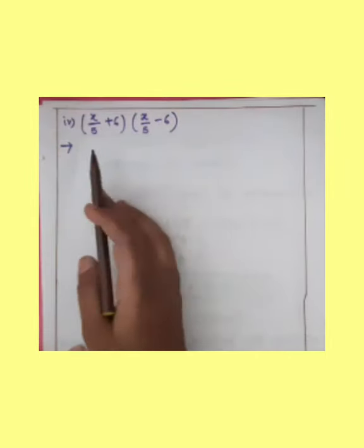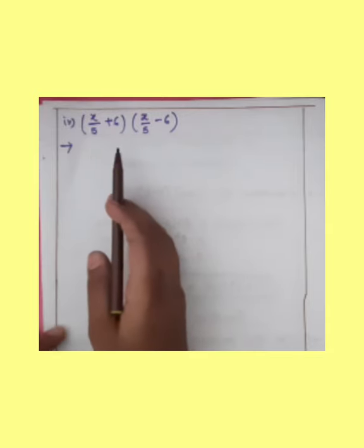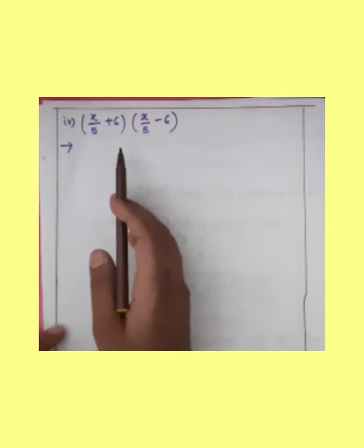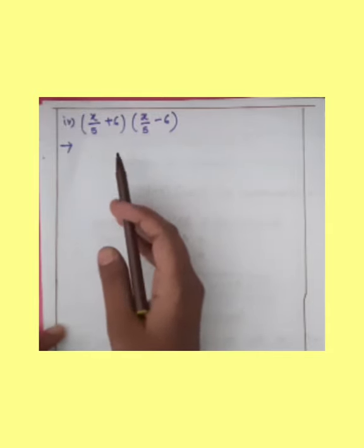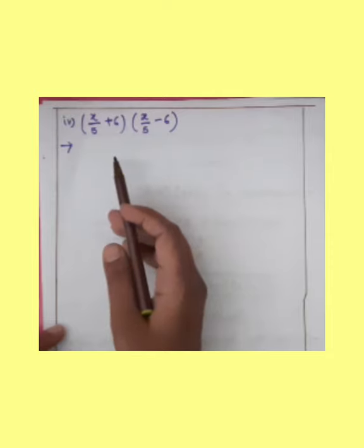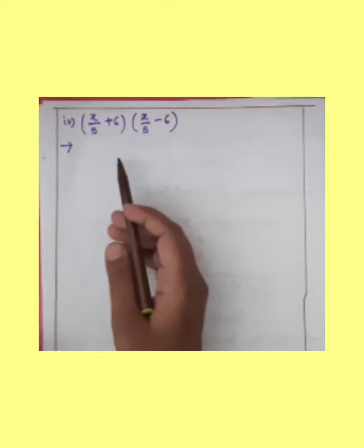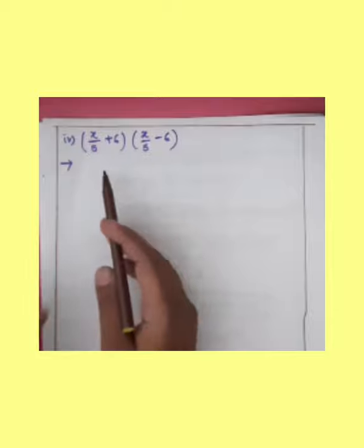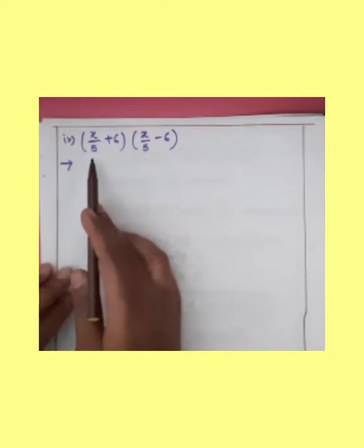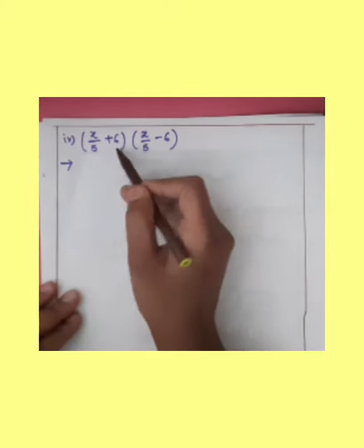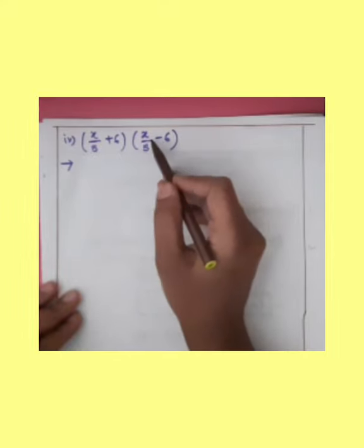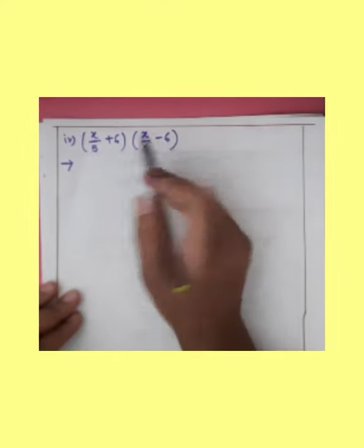Then next — the fourth example in practice set 51, question 1. X divided by 5 — that is, X upon 5 plus 6 — into another bracket X upon 5 minus 6.